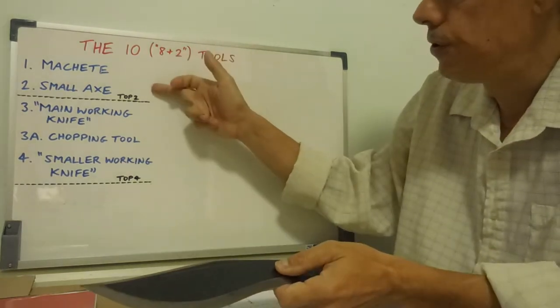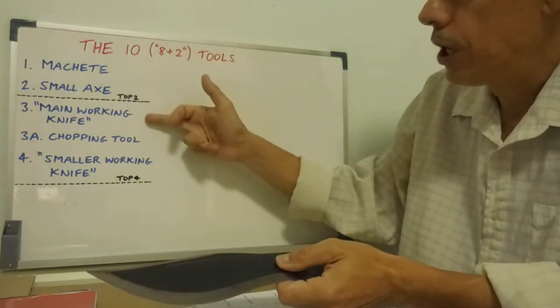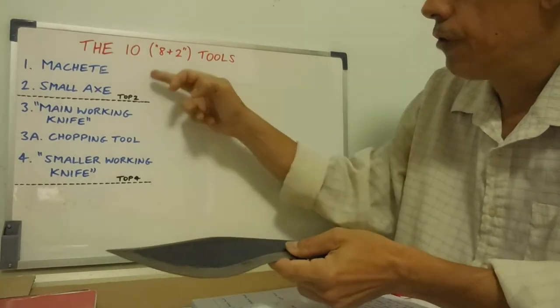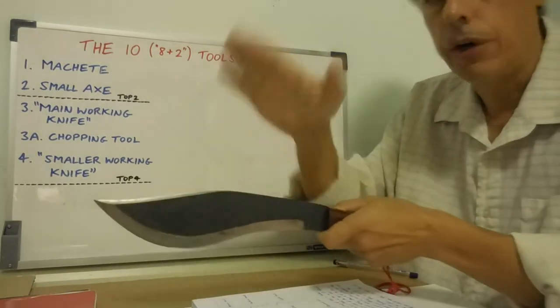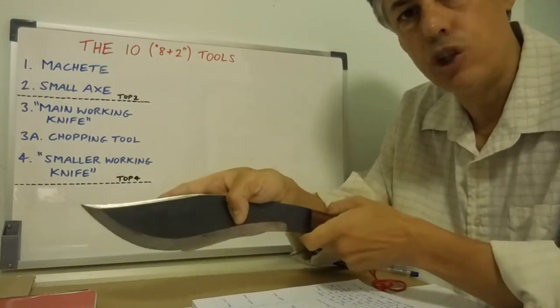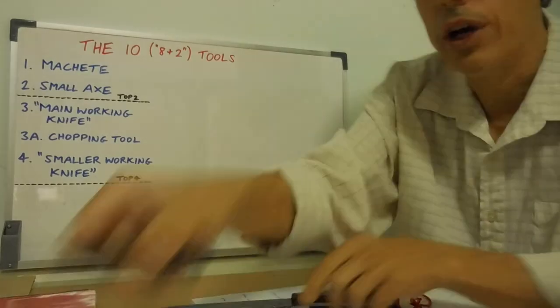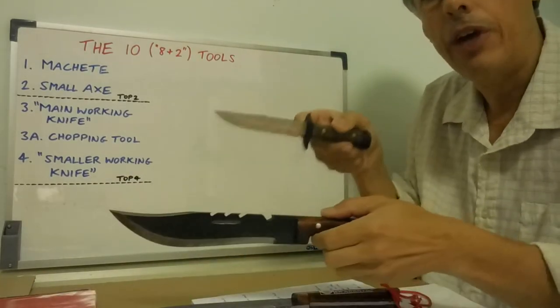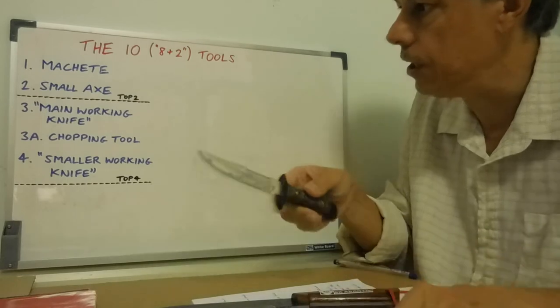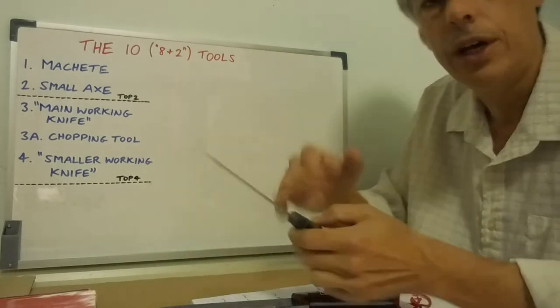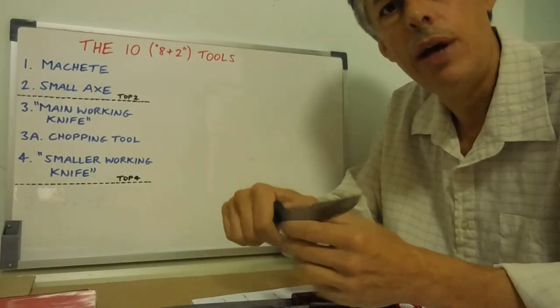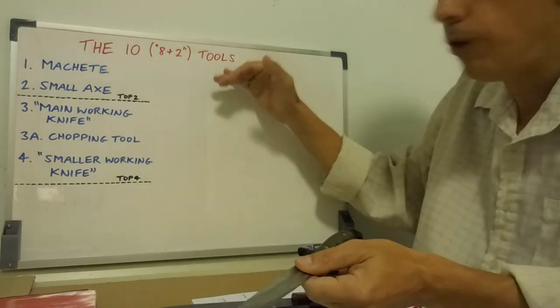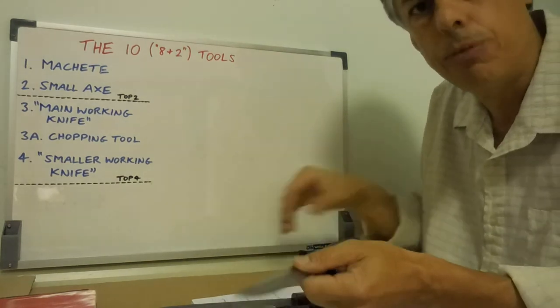You've got your top two tools, then your main working knife. If you're not taking the top two tools, you've got the chopping tool for some chopping for the short term, then your smaller working knife, just like that. And they're your top four tools, in my opinion. If you've got those top four tools, you're laughing. You can pretty much do everything under the sun. We'll move on now to and round out the top 10 tools.